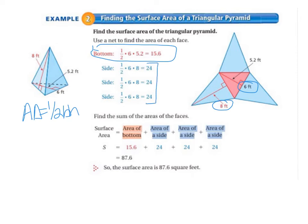And there's three of those. So we add up the area of those faces. And the area of the bottom plus the area of each of the sides is 87.6. So the surface area is 87.6 square feet.